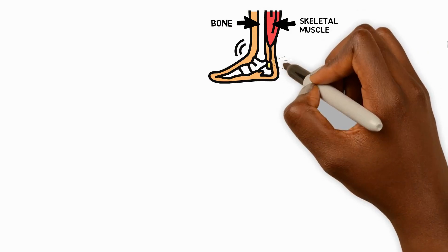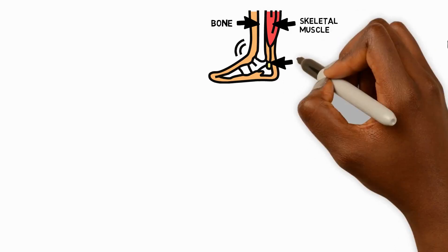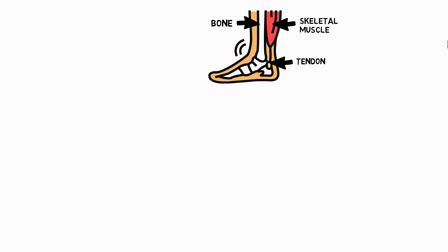They're attached to bones by strong, flexible, rope-like structures called tendons. These muscles can only pull, they cannot push, so they have to work in pairs to move our body parts.